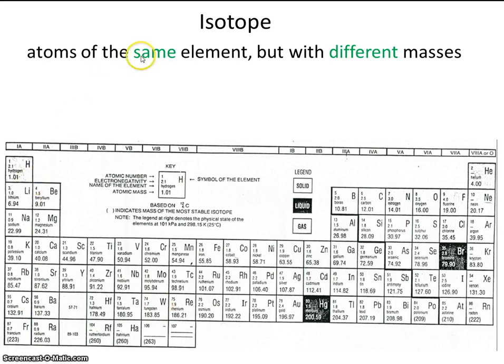You got that? They're going to be atoms of the same element, but they'll have different masses. And the way they'll have different masses will be because they have a different number of neutrons.